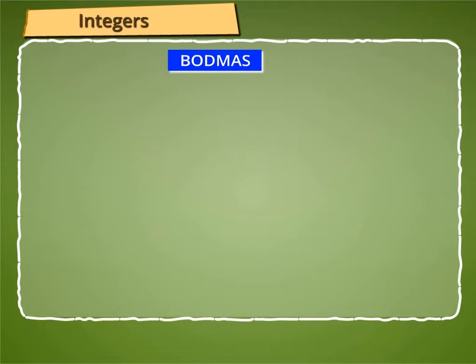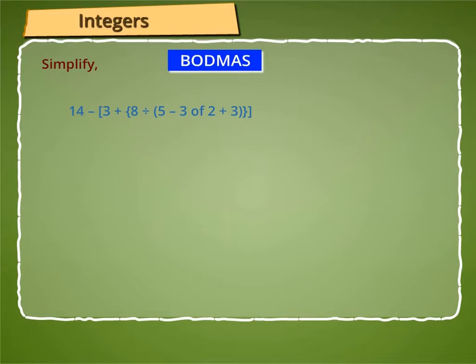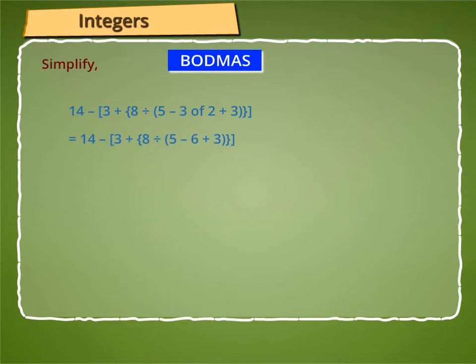Let us solve one problem to understand the simplification of integers. Let us simplify: 14 minus 3 plus 8 divided by 5 minus 3 of 2 plus 3. That is, 14 minus 3 plus 8 divided by 5 minus 6 plus 3.